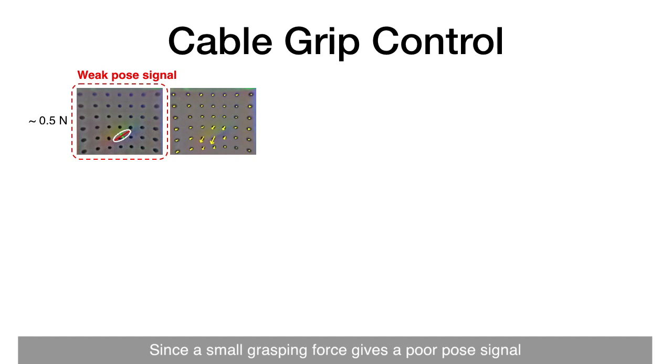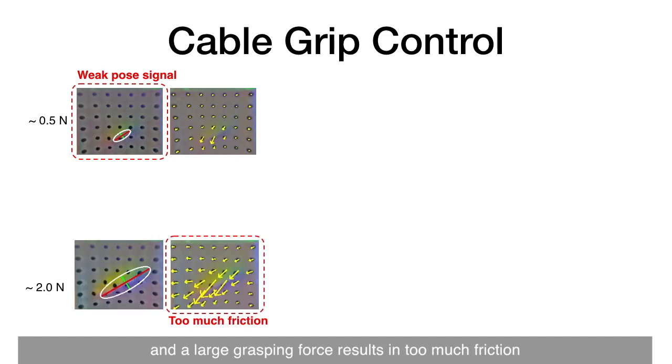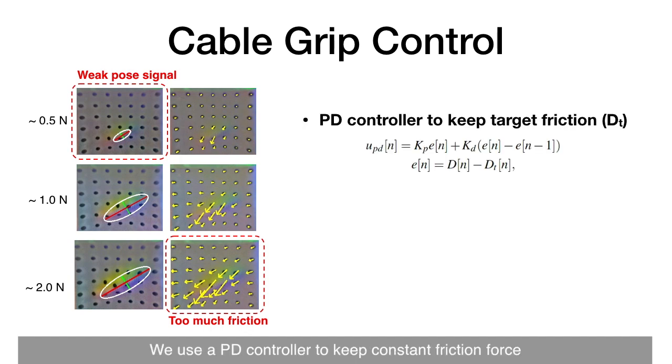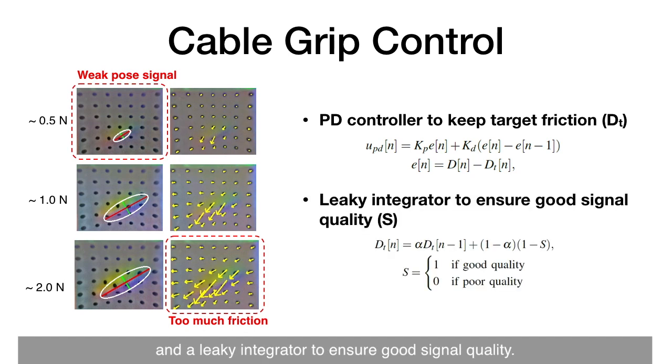Since a small grasping force gives a poor pulse signal, and a large grasping force results in too much friction, controlling grip force is essential. We use a PD controller to keep constant friction force, and a leaky integrator to ensure good signal quality.